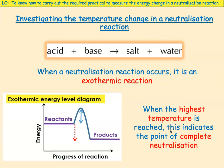If we were investigating the temperature change in a neutralisation reaction — we've got an acid and a base, or an acid and an alkali — we'll get a salt and water. When a neutralisation reaction occurs, it is exothermic. When we measure the highest temperature reached, this will be the point of complete neutralisation, because it means no more reaction is going to occur after that.